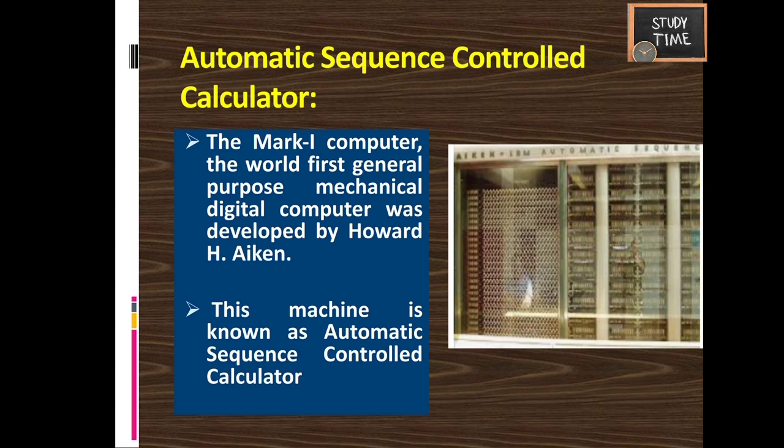The Mark 1 computer, the world's first general-purpose mechanical digital computer, was developed by Howard H. Aiken. Its design was based on the technique of punched card machinery, and this machine is called the Automatic Sequence Controlled Calculator.